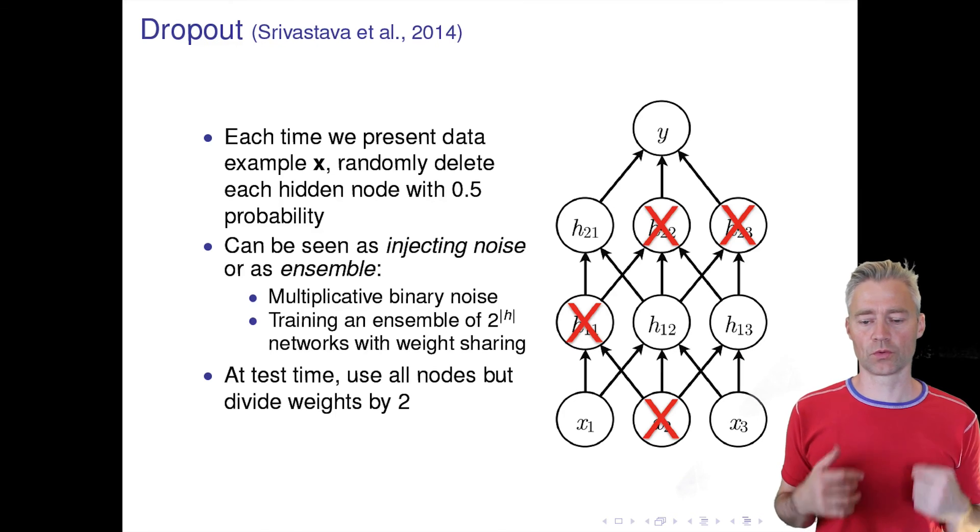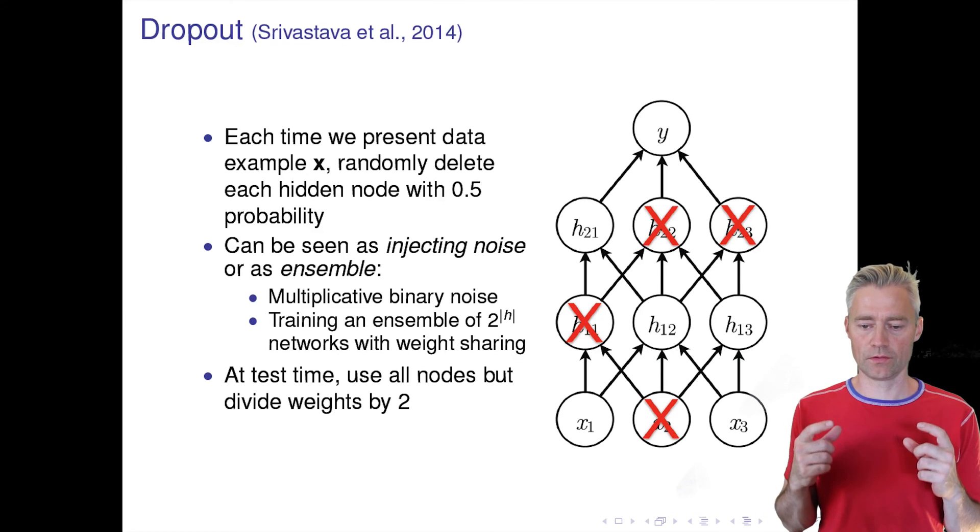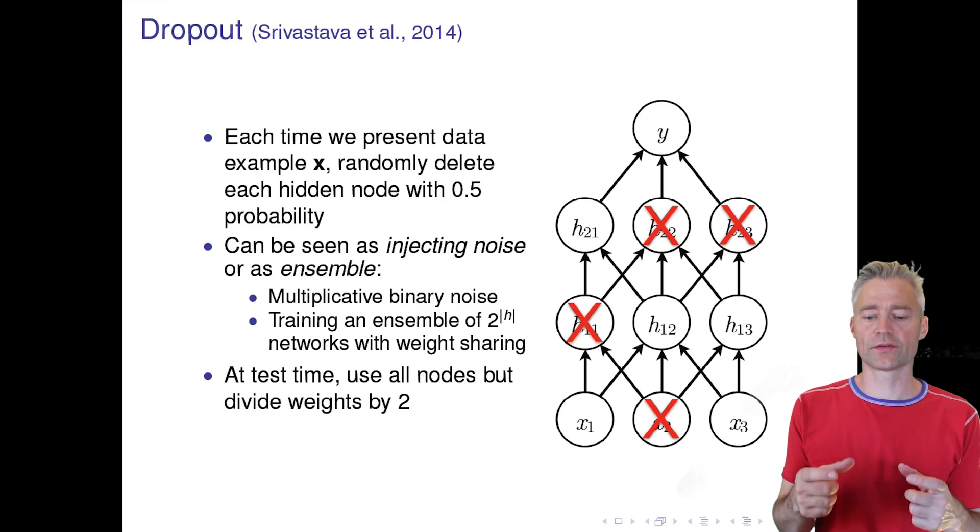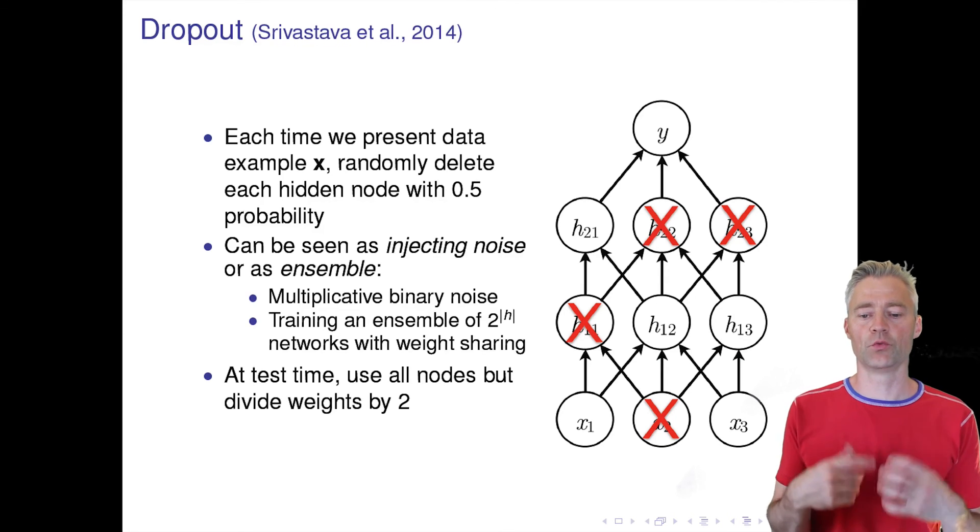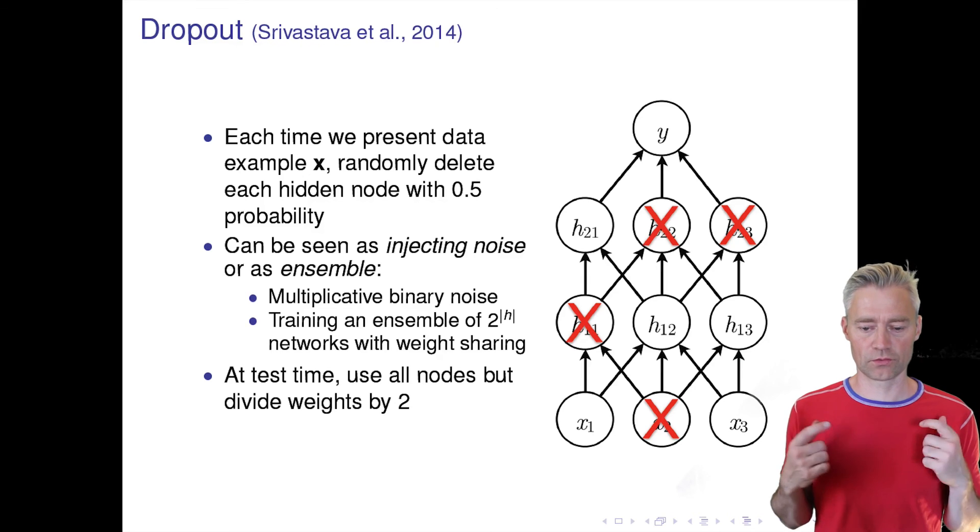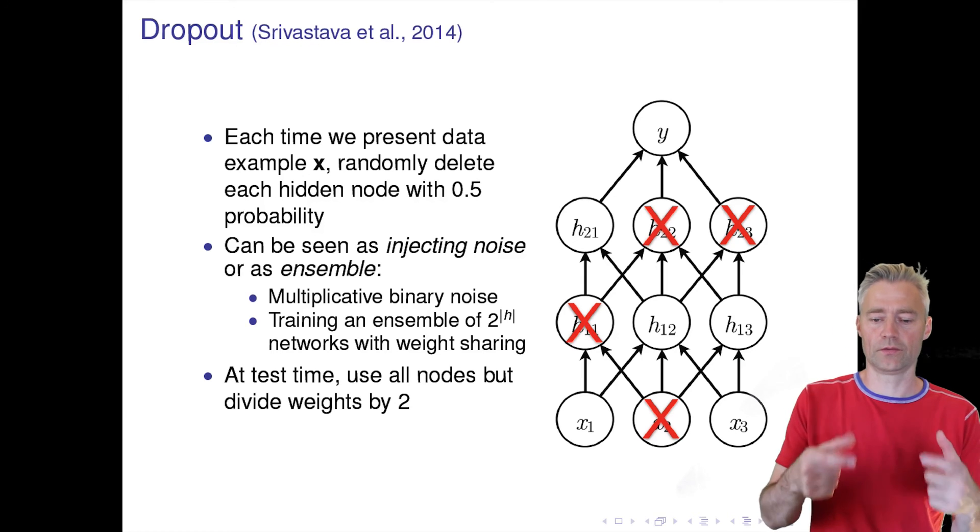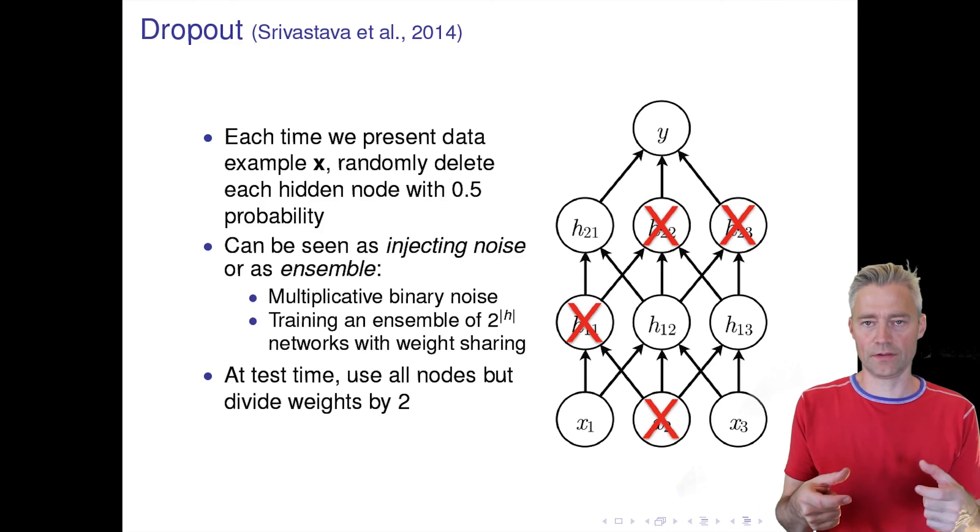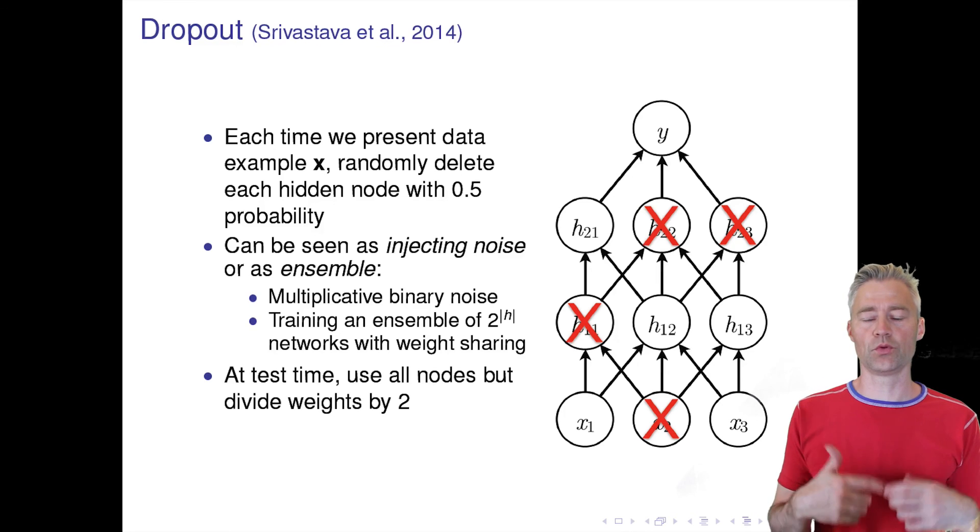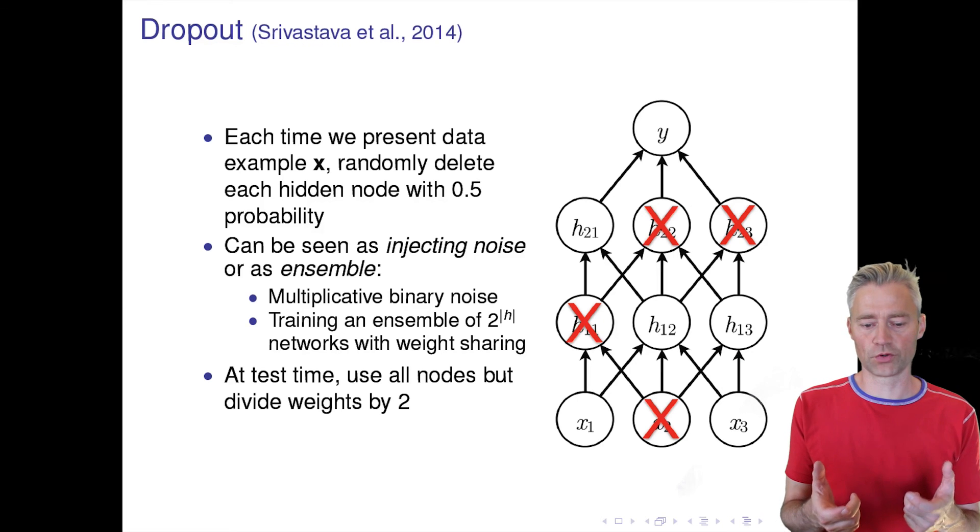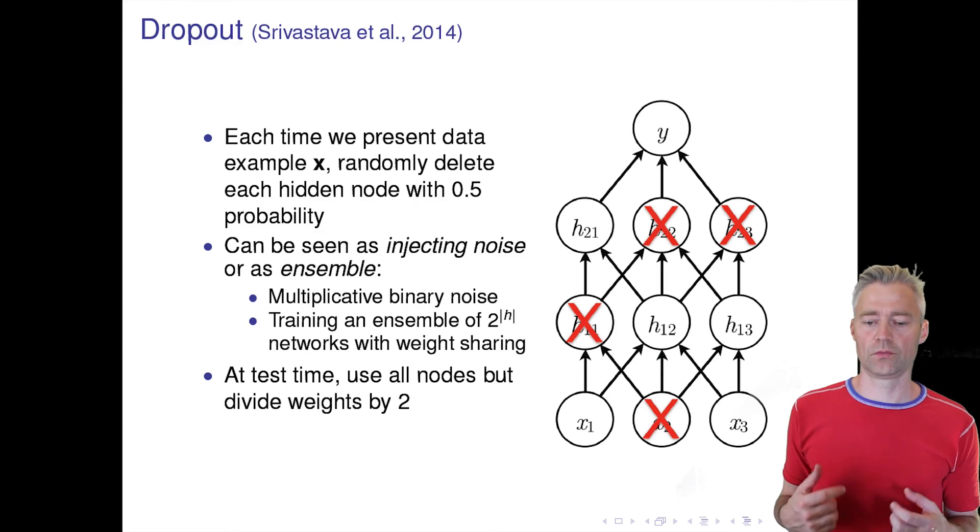I should explain completely to the end. When we present the next example we draw another mask and remove some other hidden units. So that means also when we present the first example again in the next epoch, then we'll have another mask. So the mask is new all the time. When we want to make predictions, then we should simulate this process and maybe do it one thousand times and then average the prediction over this.